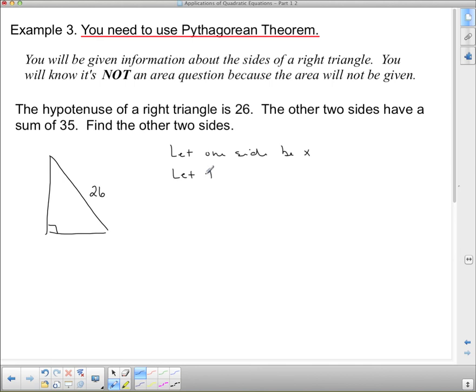The other two sides have a sum of 35. So, we can say let one side be x. Let the other, anytime you have two things that are summing to a number, the other one will always be the sum, which in this case is 35, minus the initial variable. So, one side is x, the other side is 35 minus x. So, now we have to set this up using Pythagorean Theorem.